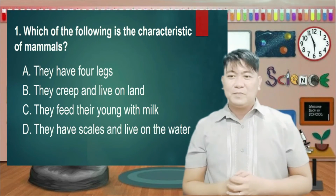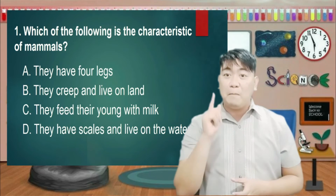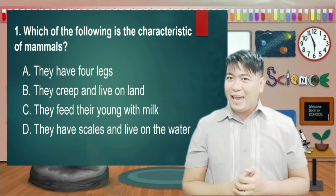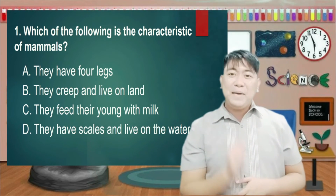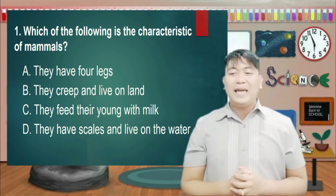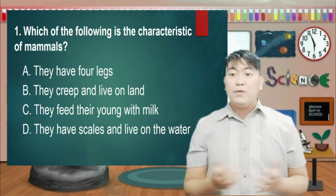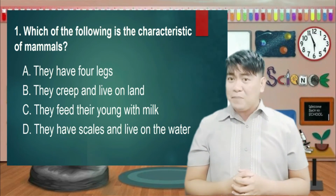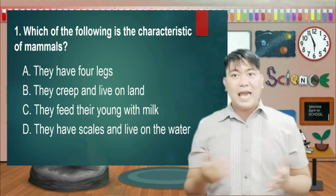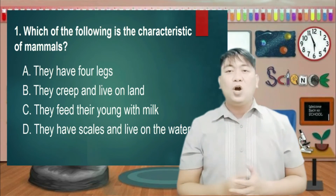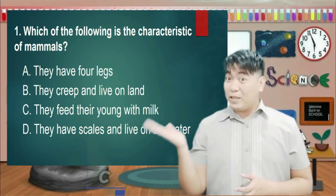Number 1: Which of the following is a characteristic of mammals? A. They have 4 legs. B. They creep and live on land. C. They feed their young with milk. D. They have scales and live in water. And the answer is... Letter C.